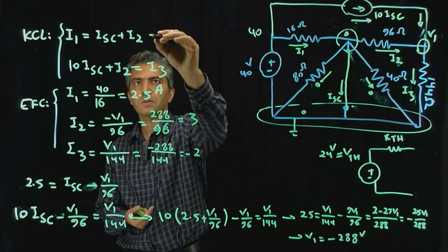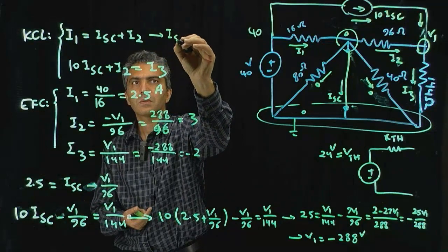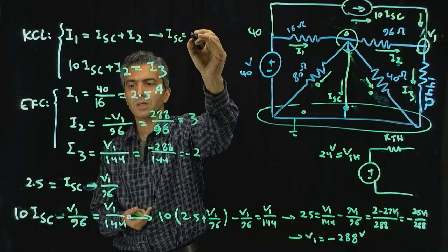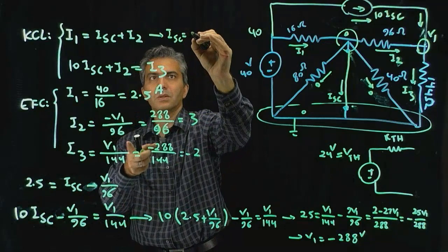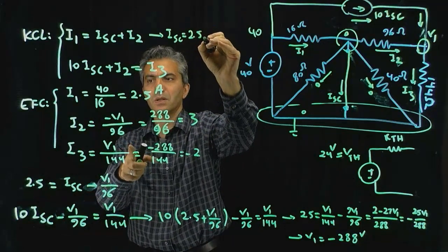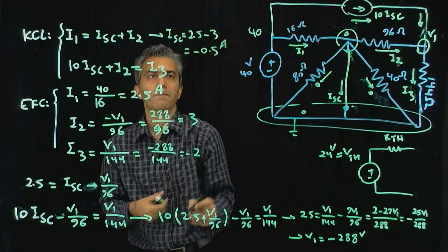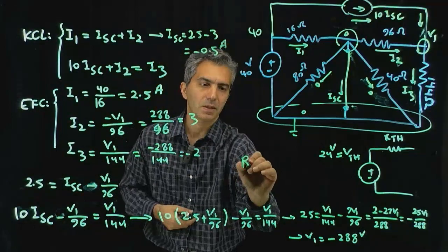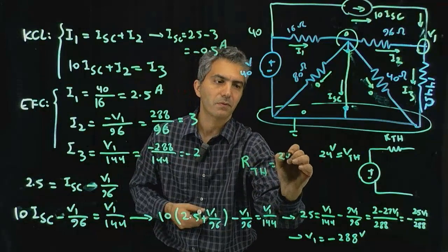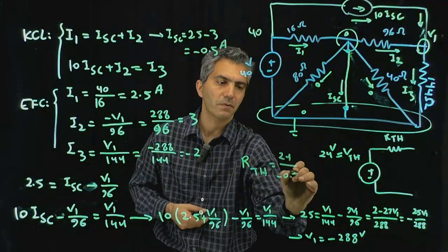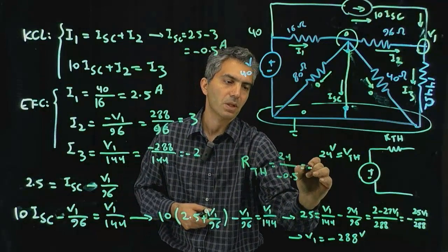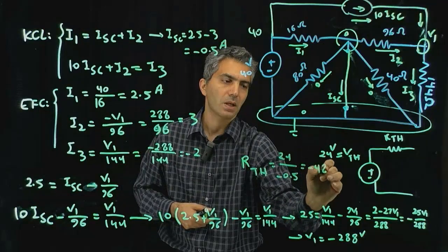I short circuit is equal to I1, which is 2.5 minus I2, which is 3, and that's minus 0.5 amp. Once we have that, we can calculate R Thevenin being 24 divided by minus 0.5, which is minus 48 ohms.